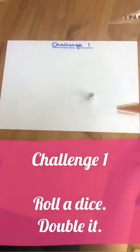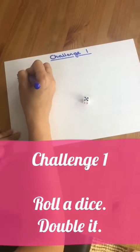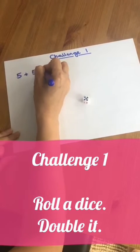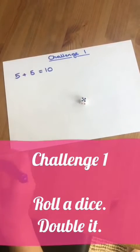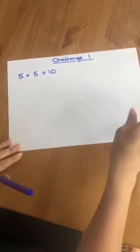Challenge one. First roll the dice, then double the number. Five add five equals ten. Double five is ten. Then roll again. If you get the same number, have another go.